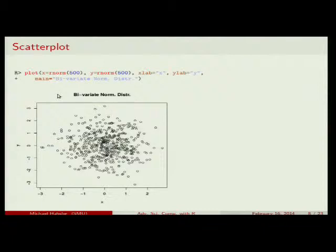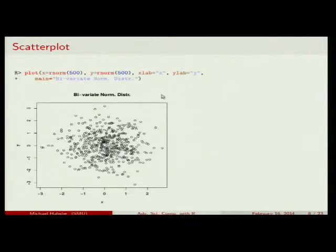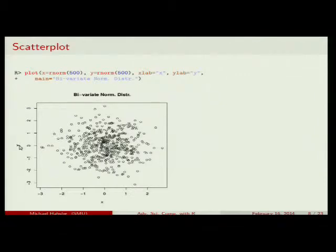Let's now go to scatterplot. This is just a bivariate normal distribution with no correlation whatsoever. I choose randomly normal-distributed variables for x and y, 500 points each, with no relationship. I say my label for the x-axis is 'x', my label for the y-axis is 'y', and the main title is 'bivariate normal distribution'. If you say sub for a subtitle, it would put it below. You could make x and y logarithmic scale with the log argument. This is the default plot you'd expect if you have two vectors of numbers as coordinates.